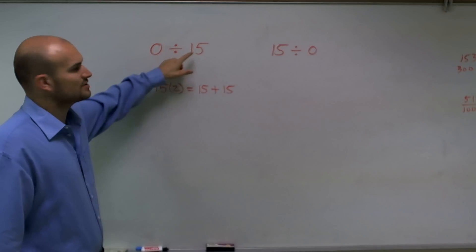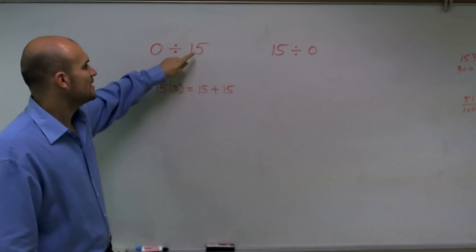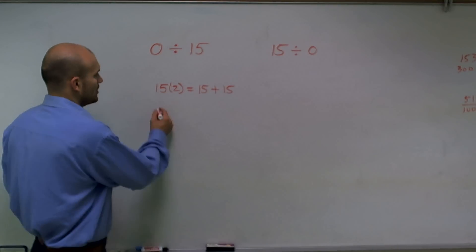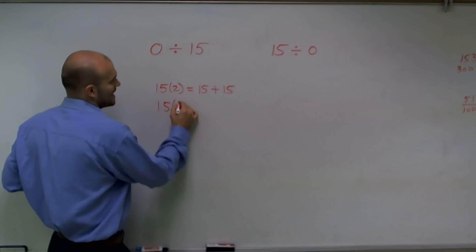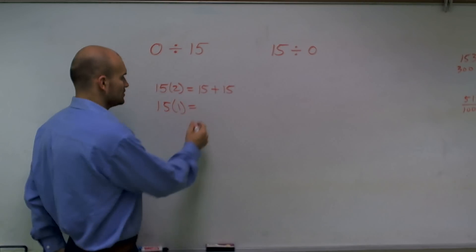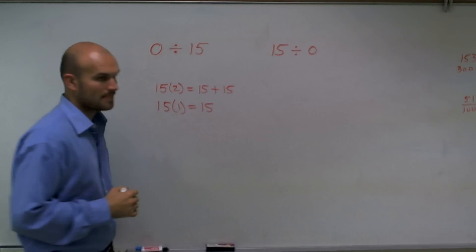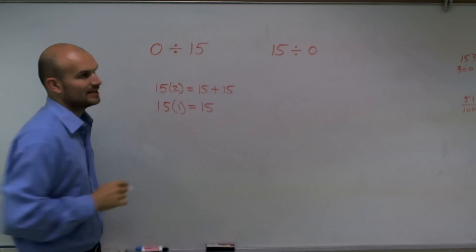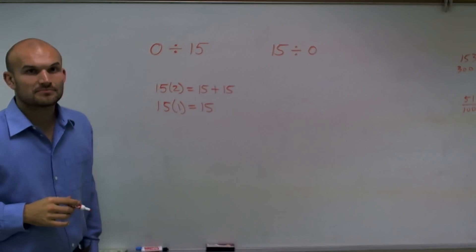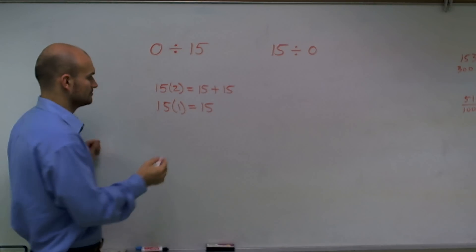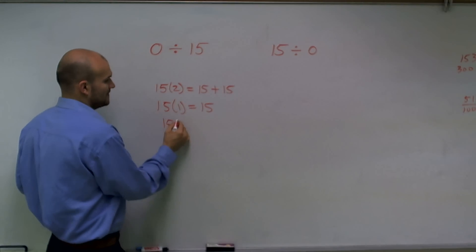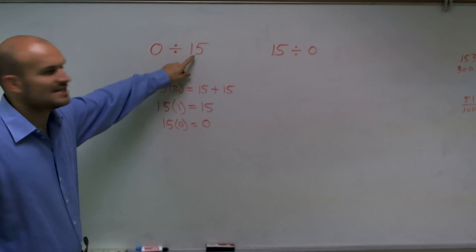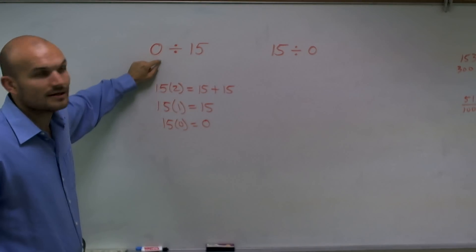Well, if I have 0 divided by 15, what's that saying? It's 15 times what is going to give me 0? Well, if I have 15 times 1 equals 15, then how many sets of 15 are going to make me 0? And the obvious answer is none. 15 times 0 is going to equal 0. Zero sets of 15 will make 0.